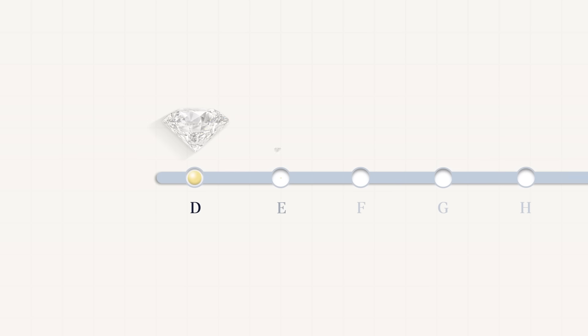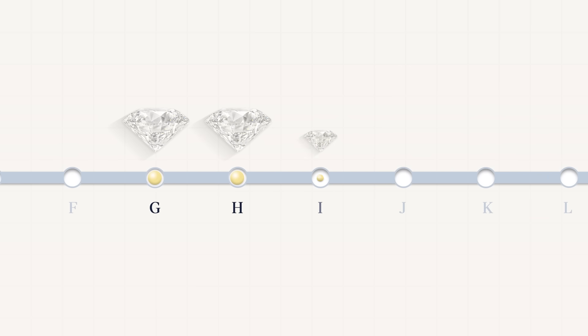A typical diamond colour grade scale goes from D to Z. D, E and F grade diamonds are colourless. G, H, I and J grades are nearly colourless.